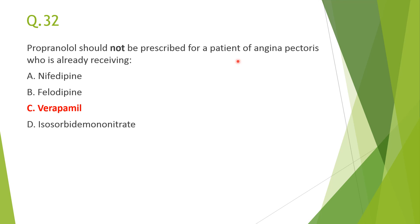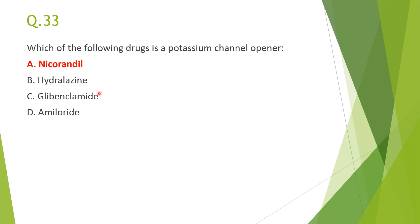Next: propranolol should not be prescribed for a patient of angina pectoris already receiving — answer C, verapamil. Propranolol causes bradycardia and depression of AV conduction, and verapamil also causes sinus bradycardia and decreases conduction velocity of SA and AV nodes. Given together, they result in additional atrioventricular block and should be avoided.